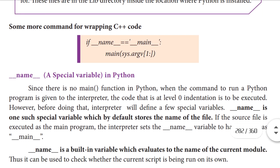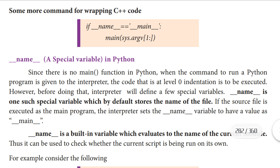So here we are using some more commands to execute the C++ program — some more commands for wrapping C++ code. Two lines of code are given: if __name__ == '__main__' followed by a colon. Another line is main(sys.argv[1:]). So we will see what is meant by this.